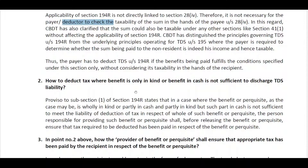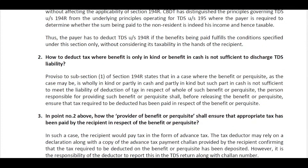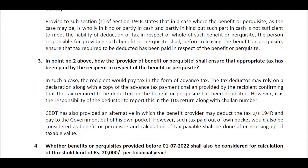The second question is: how to deduct TDS where the benefit is only in-kind or the cash component is not sufficient to discharge the TDS liability. For example, if I gift a gold coin worth ₹50,000, I am supposed to pay TDS of ₹5,000, but I have nothing to deduct from since it's an in-kind gift. The circular says: before giving that gold coin to that person, the payer needs to ensure that the applicable tax has been paid.